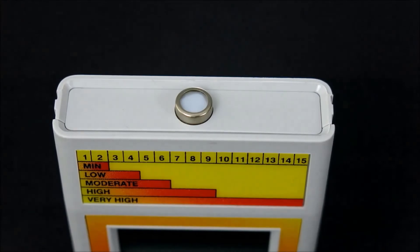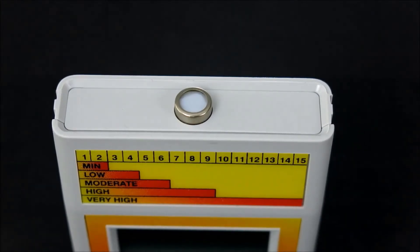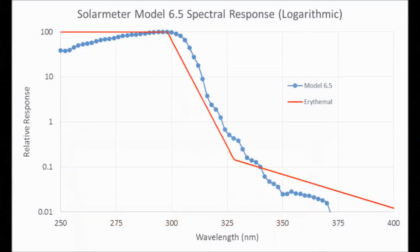The Solar Meter Model 6.5 is typically more expensive than those which measure UVA and UVB rays. 95% of natural sunlight UV is UVA.